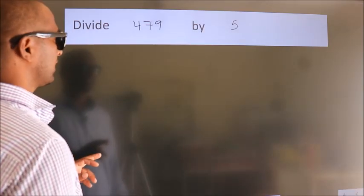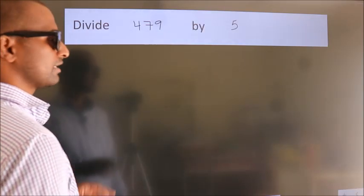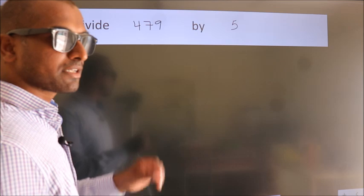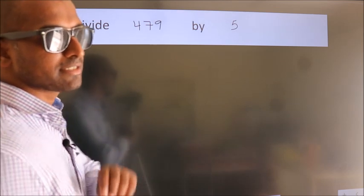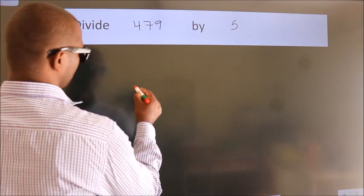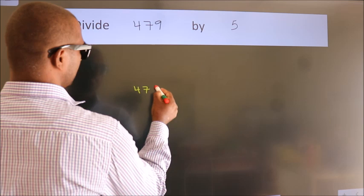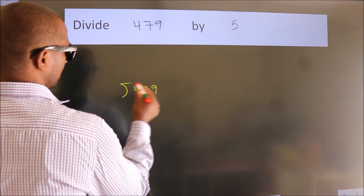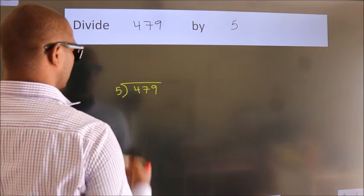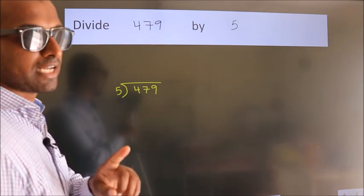Divide 479 by 5. To do this division, we should frame it in this way. 479 here, 5 here. This is your step 1.